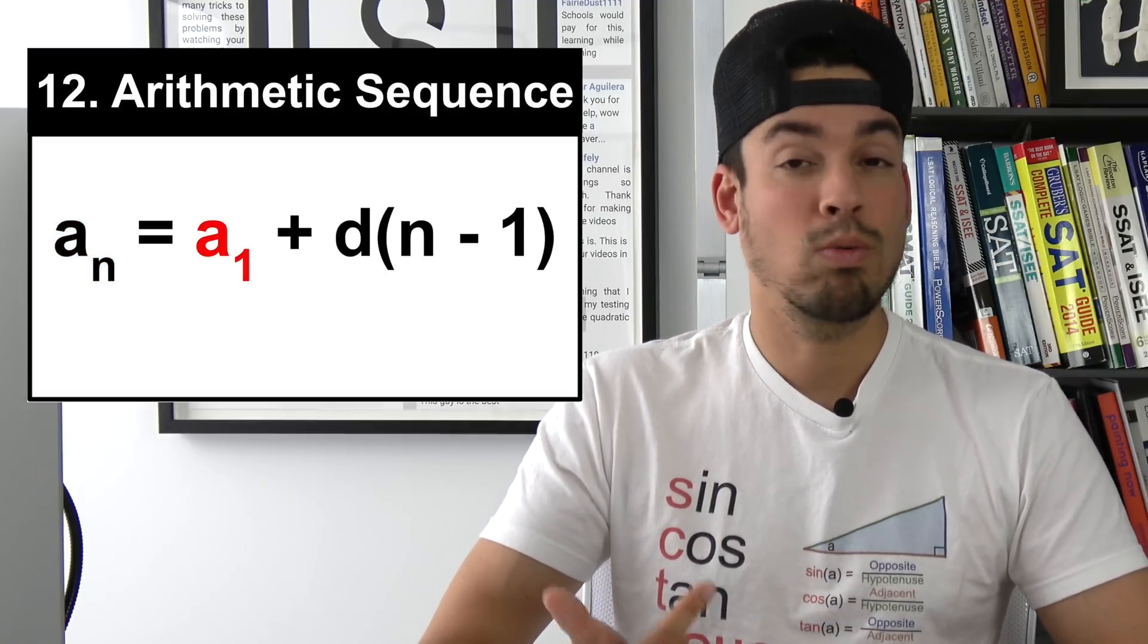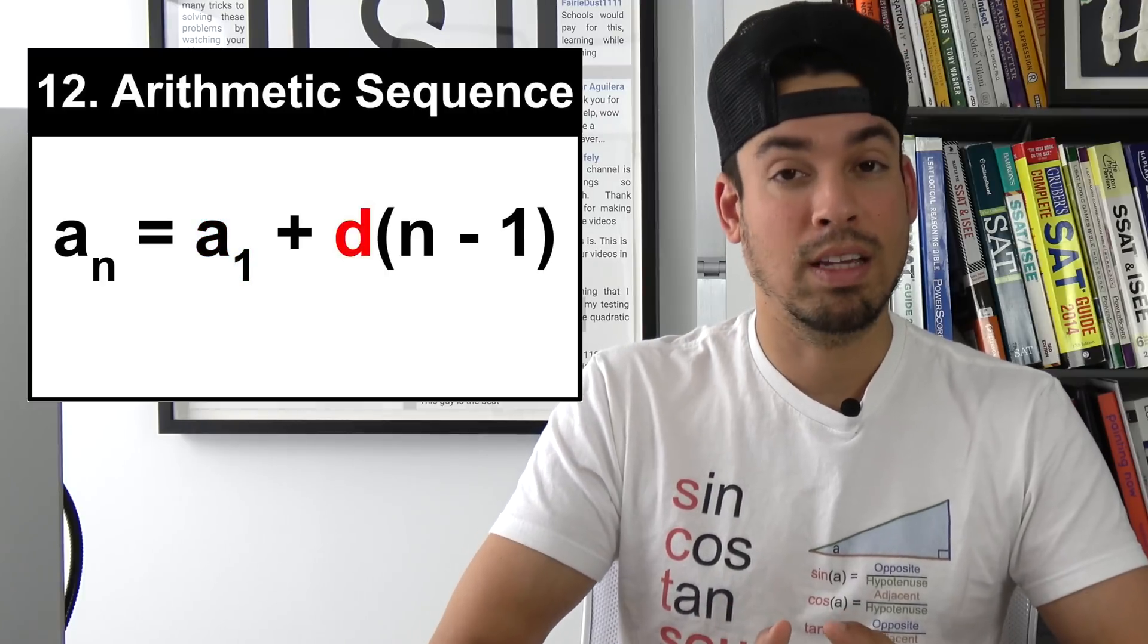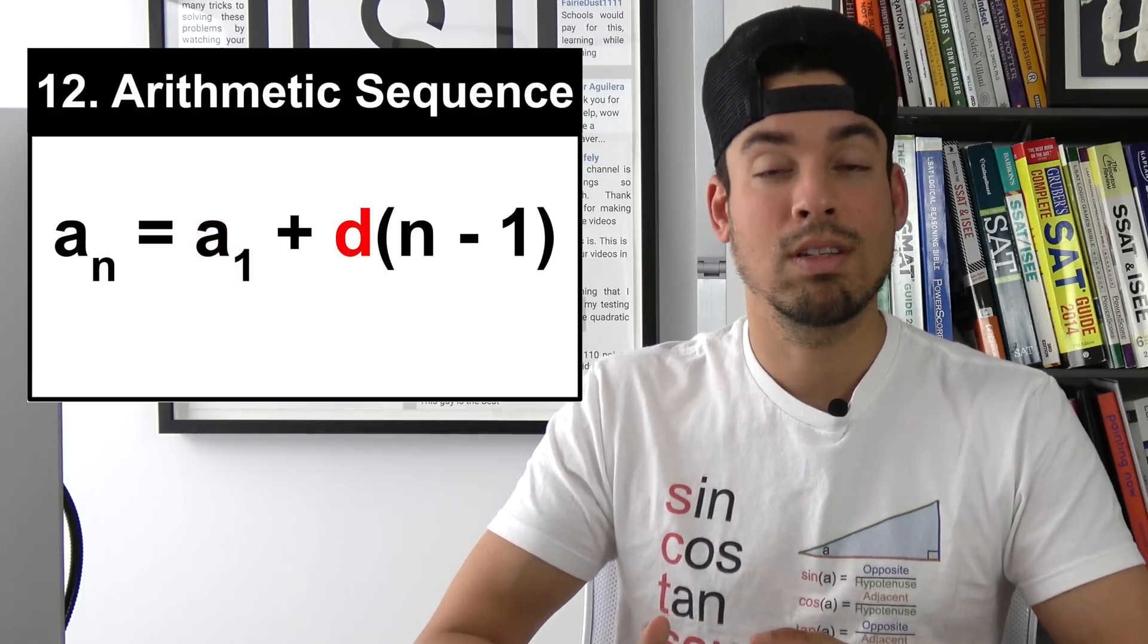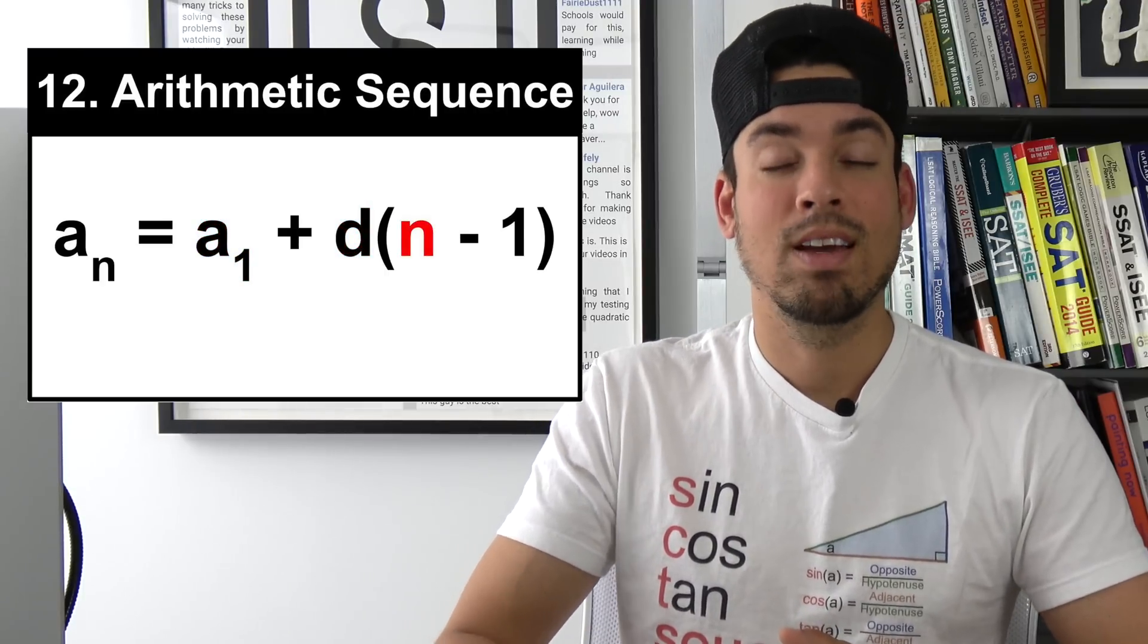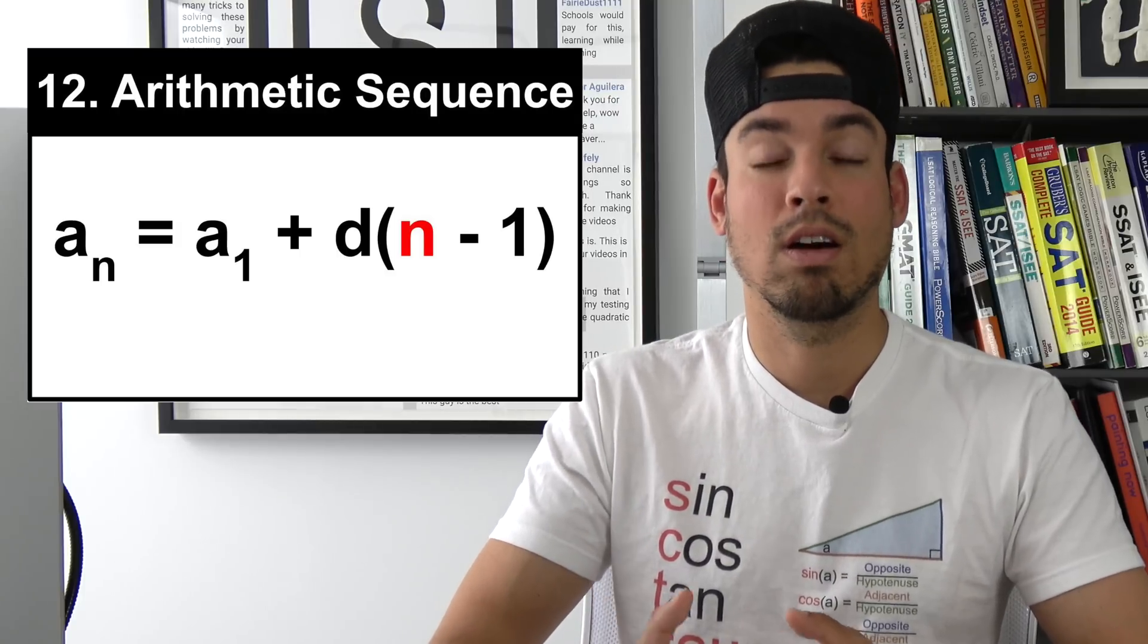It equals a sub 1 which is the first term plus d which is the common difference, like the example I gave you 2 would be the common difference, times n minus 1 and n is the term that you're trying to find like if you're trying to find the 100th term you'd plug in 100 for n.